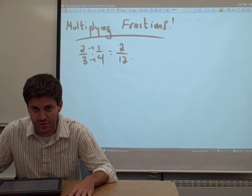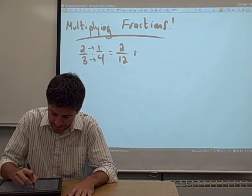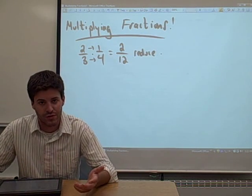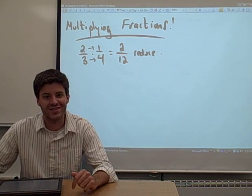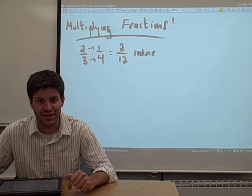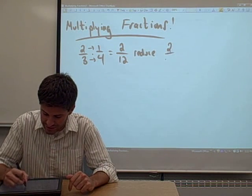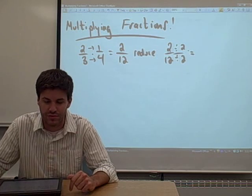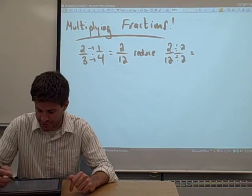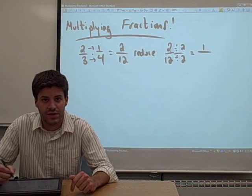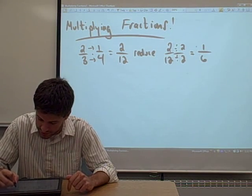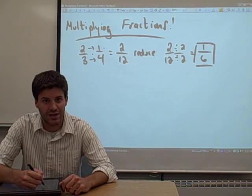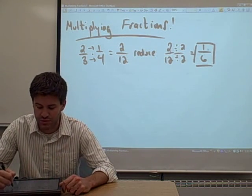Then what you have to do is reduce. In some cases your fraction will already be reduced, but in this case you might notice that two twelfths is not in lowest terms. The reason is that both two and twelve can be divided by the whole number two. Two divided by two in the numerator gives you one. Twelve divided by two in the denominator gives you six. So two thirds times one fourth equals one sixth.